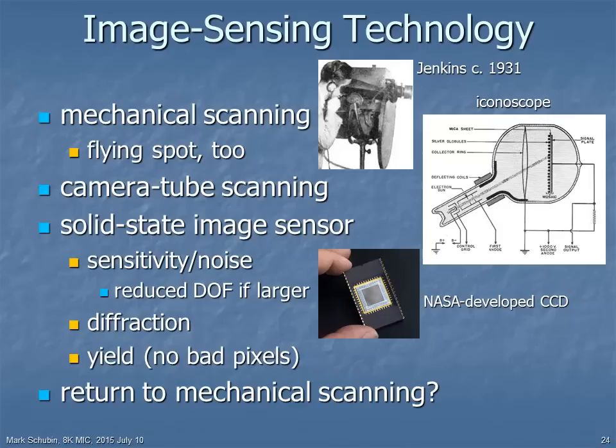Over the years, video image sensing technology has moved from mechanical scanning to camera tubes to solid-state image sensors. As the spatial resolution increases, however, if the image sensor size stays the same, the photosites get smaller. That raises concerns about sensitivity and noise. For bigger sensors, there are also depth-of-field concerns. Smaller photosites also raise issues of diffraction, and whether they're large or small, there's an issue of yield — a single bad photosite can put a visible dot in the picture.